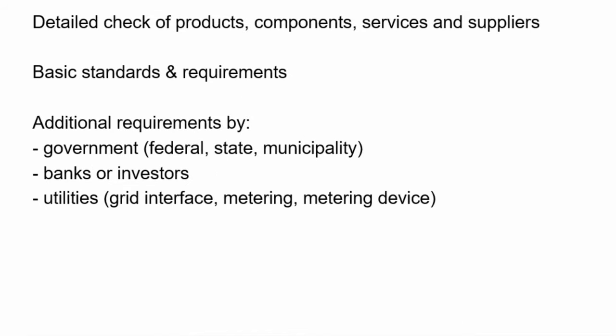Now we come to the detailed design phase — a detailed check of products, components, services, and suppliers. We have first basic standards — for example, the module has to be certified to IEC 61215 — or additional requirements, such as PID resistance, ammonia resistance if there's a farm nearby, or salt mist resistance if you're at the seashore. You have to choose an adequate norm and make it part of the contracts with the supplier.